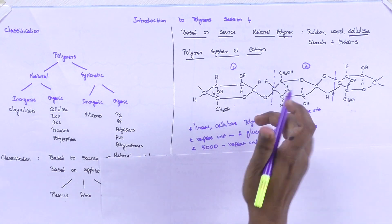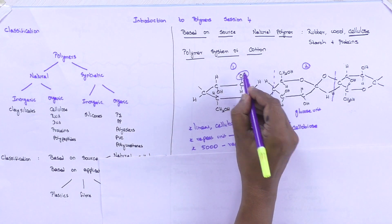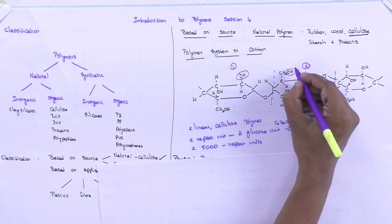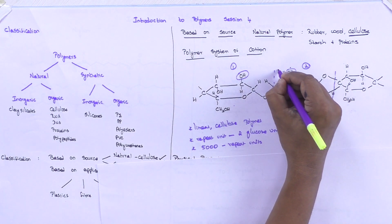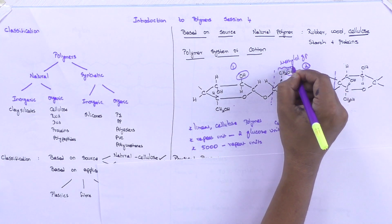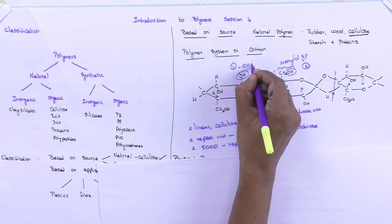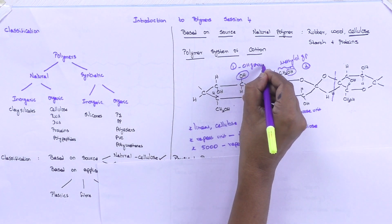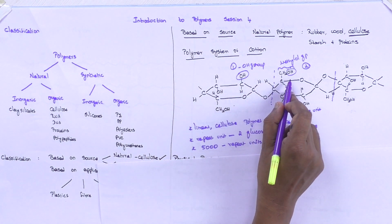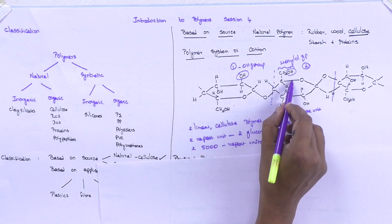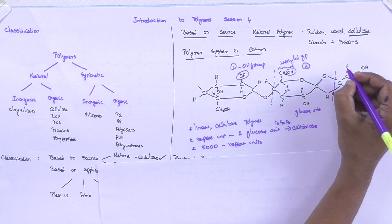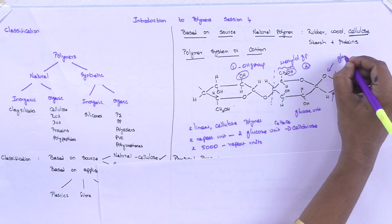You can also observe OH groups present in the structure — both free hydroxyl groups and methylol hydroxyl groups. This group is called the methylol group, and the other is a simple OH group. The reason I am discussing the OH group is that it plays a major role in deciding the nature of the polymer. Additionally, there is a glucoside oxygen atom which indicates the electronegative character of the polymer.